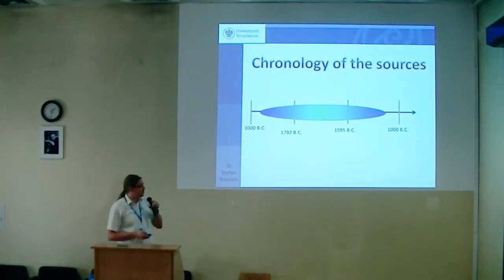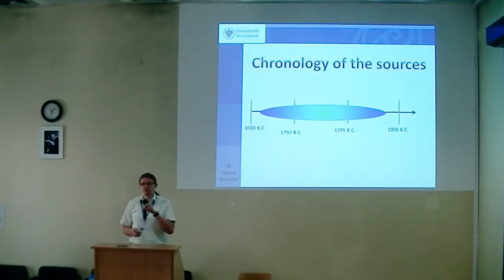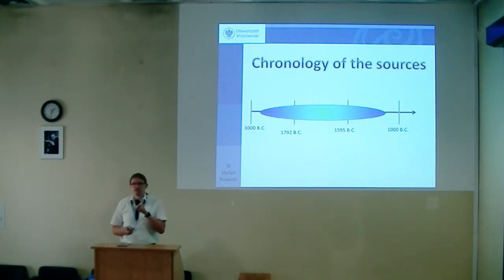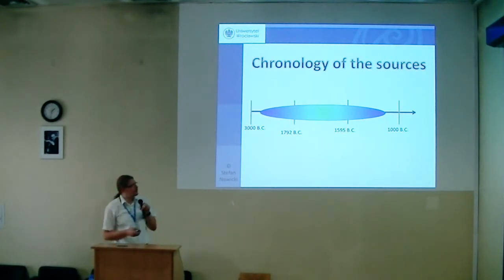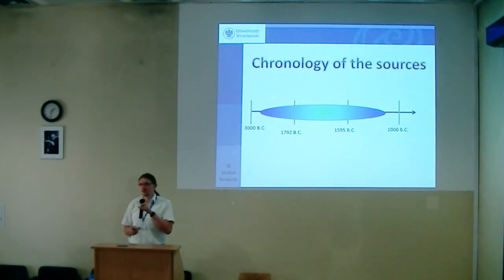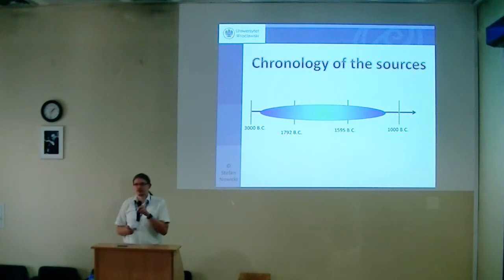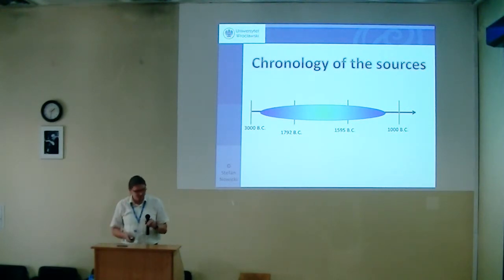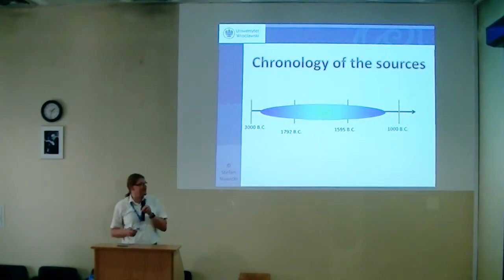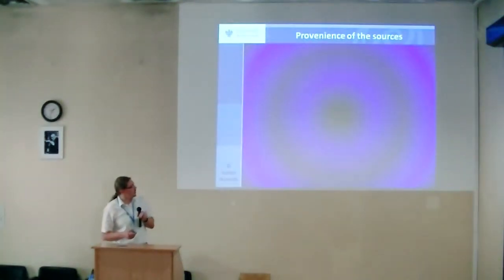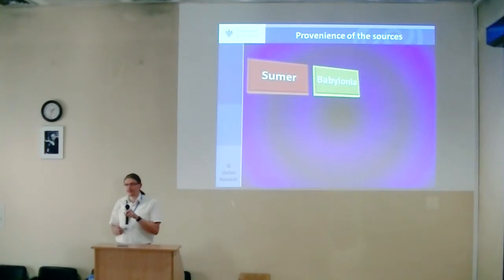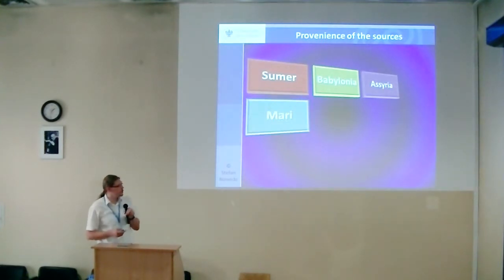The chronology of the sources I would like to discuss starts around 2700 BC and ends in 1115 BC, because the number of sources is so outstanding that a longer period would not be manageable by a single person for one single conflict. The provenance of the sources covers nine different regions: Sumer, Babylonia, Syria, and others.